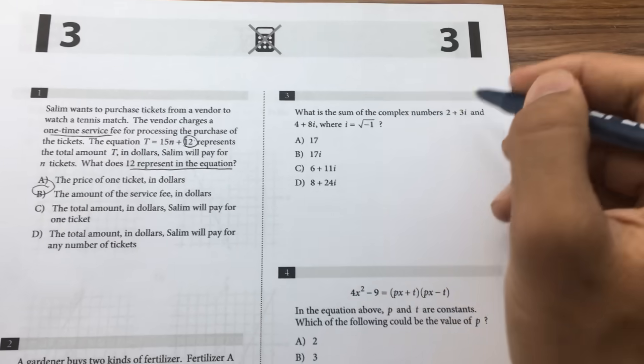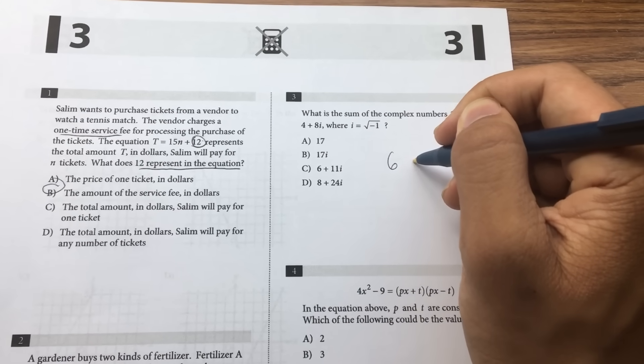Number 3 is simple addition. 2 plus 4 is 6, 3i plus 8i is 11i.